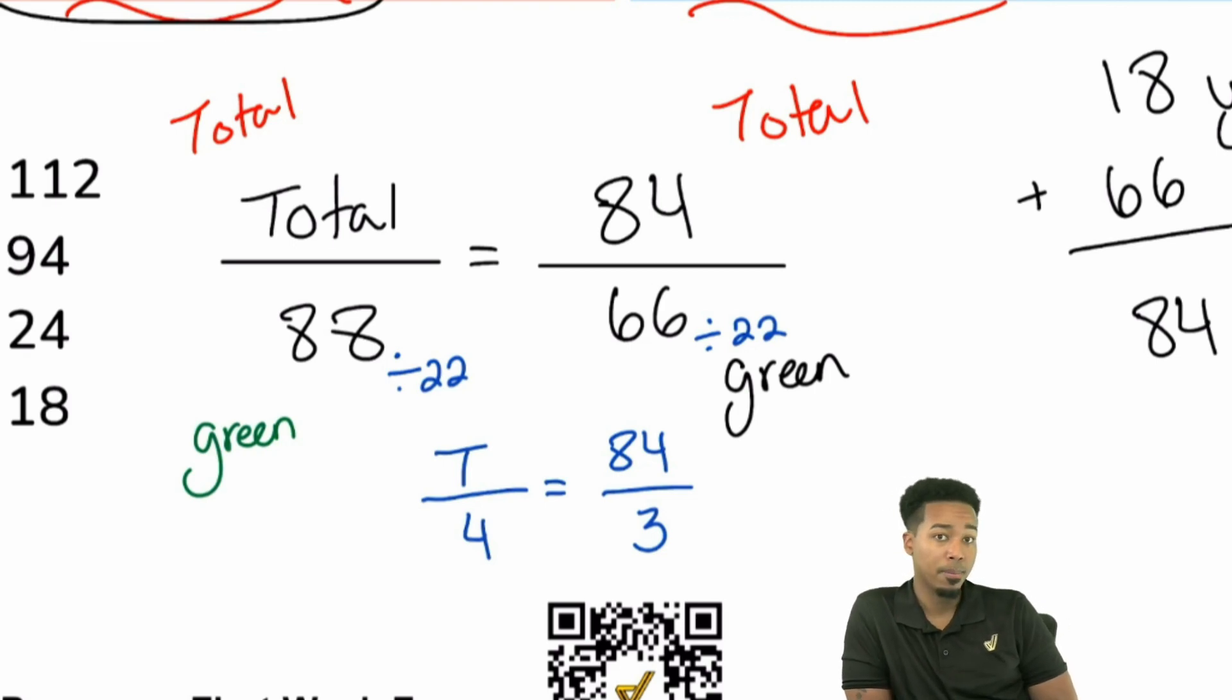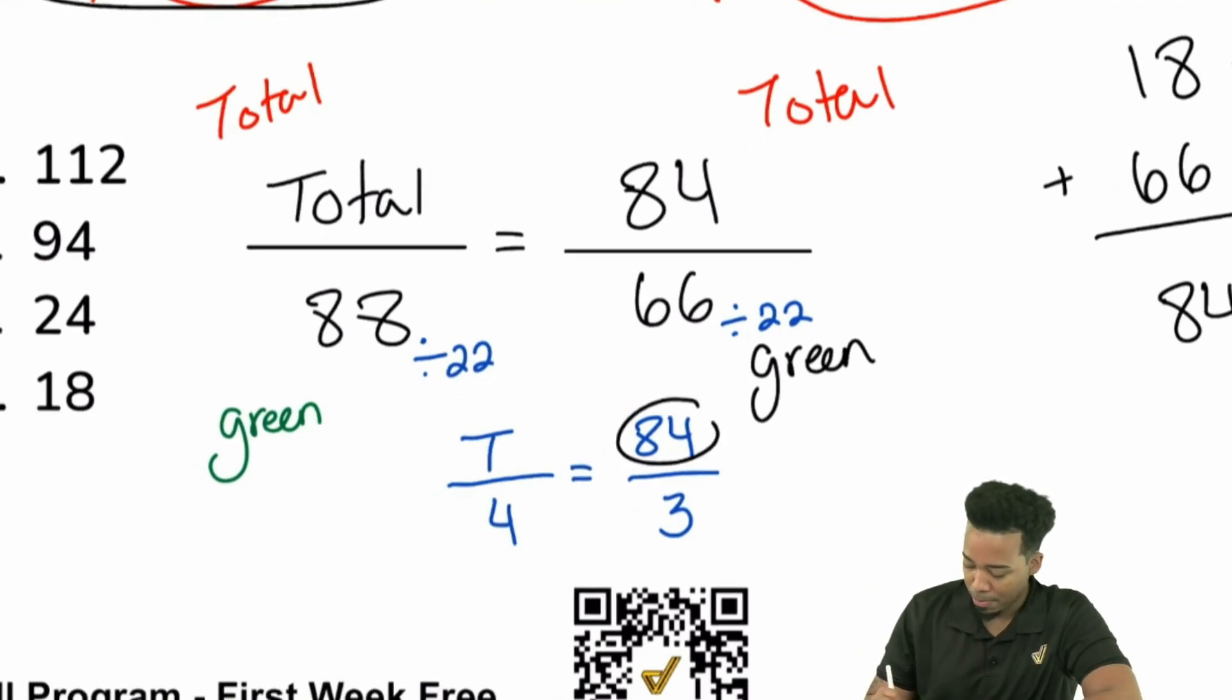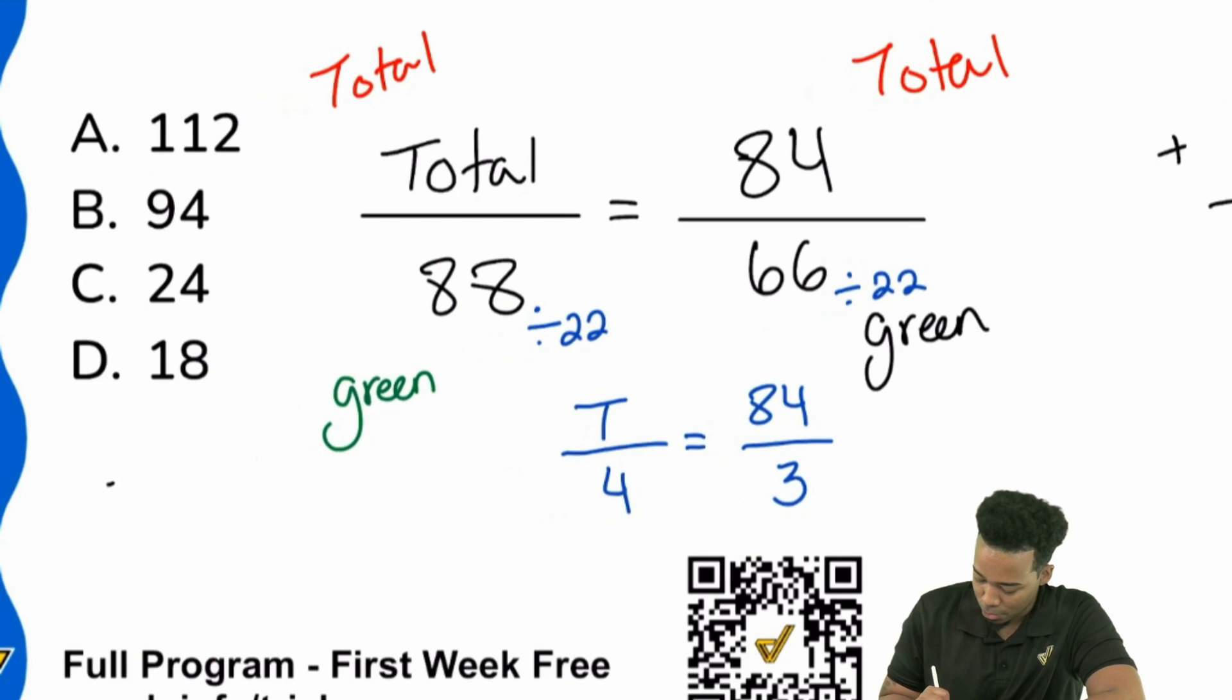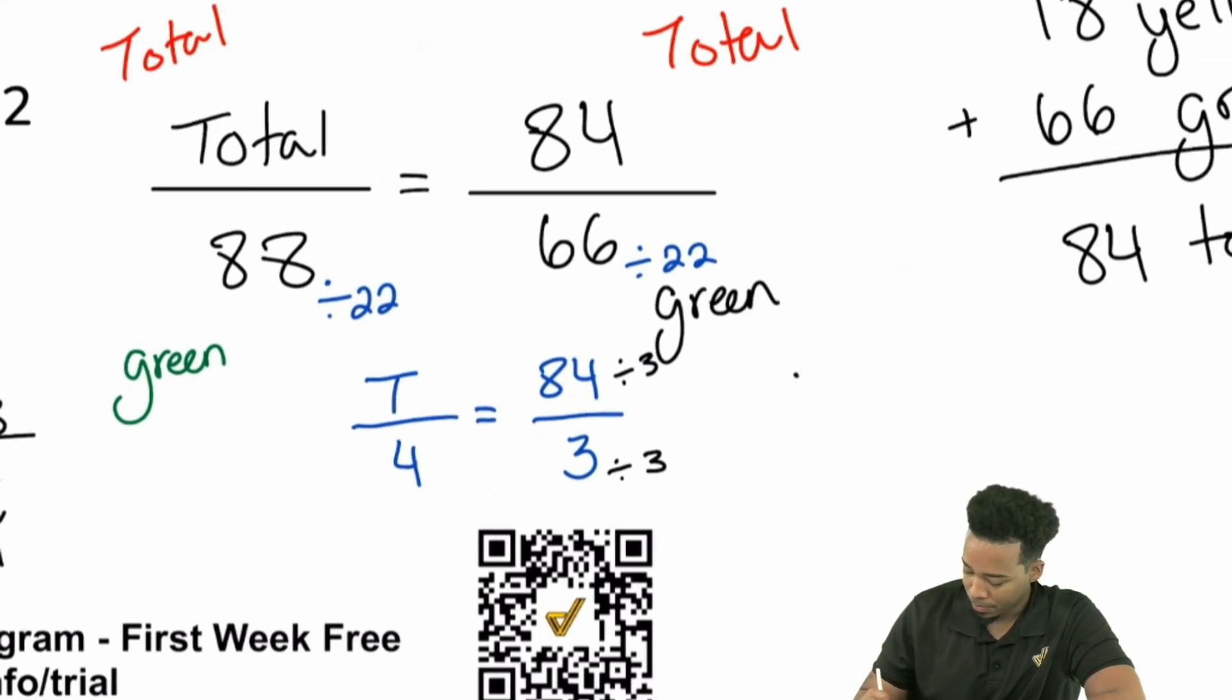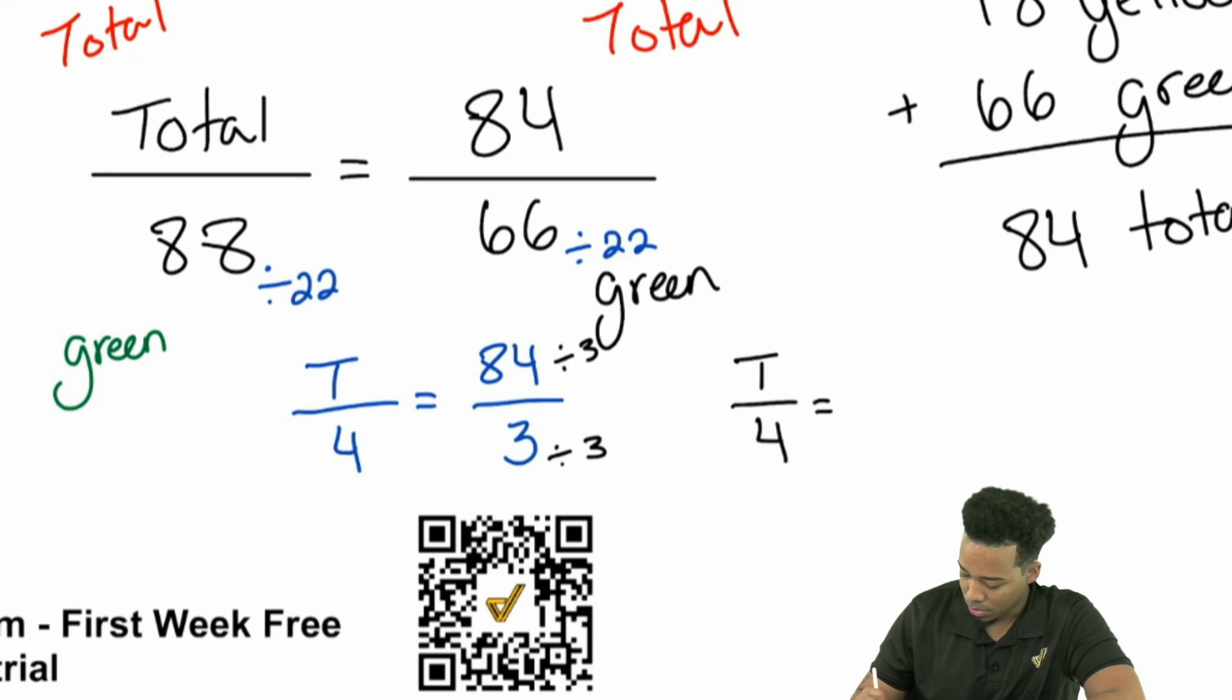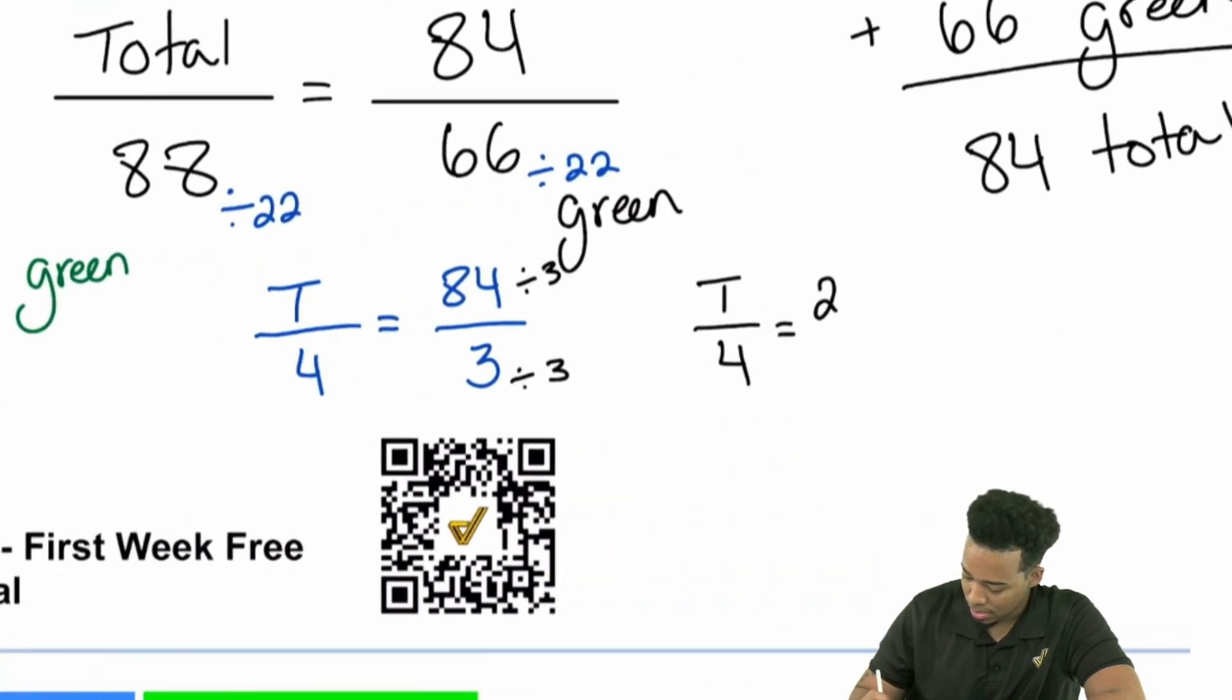And another thing that I might be willing to look at is, how many times does 3 go into 84? Can I simplify that too? Yes, you can. You can go ahead and see that. Because 8 plus 4 is 12. That means 3 can go into 84. And if you didn't know that rule of divisibility, let me prove it to you right over here. 3 into 84, 3 into 8, that's going to be 2. Then 3 into 24, that's going to be 8. So that would be 28 if I divided the 3 out.